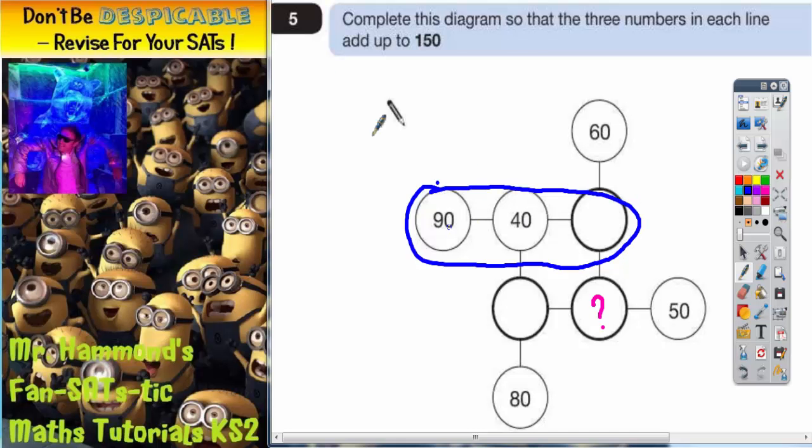If we add 90 and 40 together, let's see what that gives us. Zero add zero is zero, nine add four is thirteen. So 90 and 40 is 130. Now to get up to 150, the total of the line, we would need to add another 20. So this mystery number here would need to be 20, and then that line would now make 150.